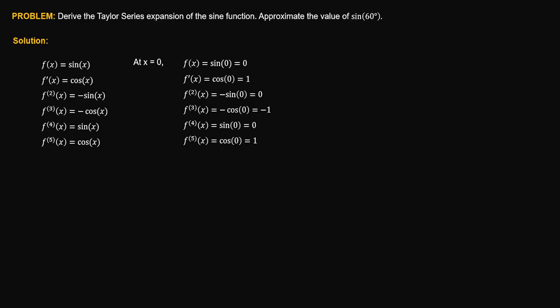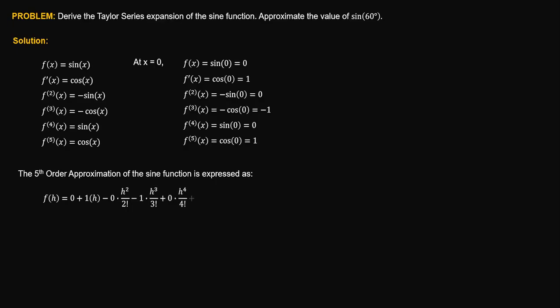The derivative values follow a repeating pattern: zero, one, zero, negative one, and so on. Therefore, we can now use these derivative values in our Taylor series expansion of the sine function. For a fifth order approximation, the Taylor series expansion will be f of h is equal to zero plus 1 times h, minus 0 times h squared over 2 factorial, minus 1 times h cubed over 3 factorial, plus 0 times h to the 4th over 4 factorial, plus 1 times h to the 5th over 5 factorial. Simplifying, this gives the general Taylor series expansion of the sine function.